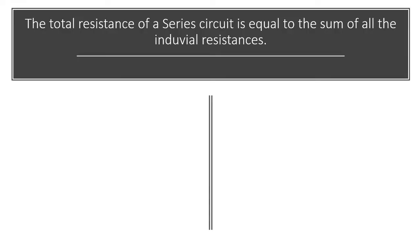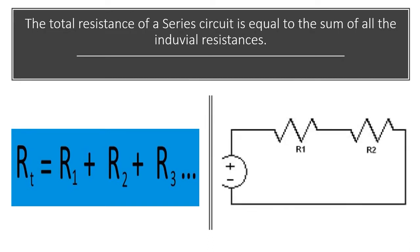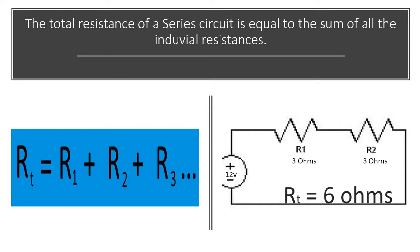The total resistance of a series circuit is equal to the sum of the individual resistances. RT — which just means resistance total — is equal to R1 plus R2 plus R3, and so on, however many resistors you have. We have a 12-volt battery in this case, three ohms on R1 and three ohms on R2, so this is gonna give us an RT of six ohms.